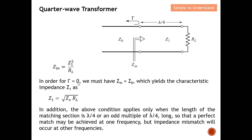To make the reflection coefficient equal to zero, Z_in must equal Z_0. Setting Z1 squared over R_L equal to Z_0 and solving for Z1 gives us the characteristic impedance formula for the quarter wave transformer. In short, Z1 equals the square root of Z_0 times R_L. You simply need to know Z_0 (typically 50 ohms) and your resistive load value, then calculate Z1 using this equation. The length of the transmission line must be quarter wavelength.